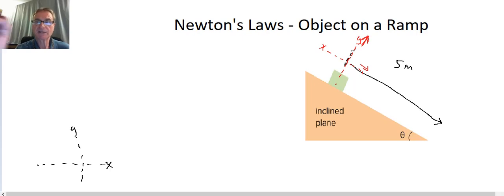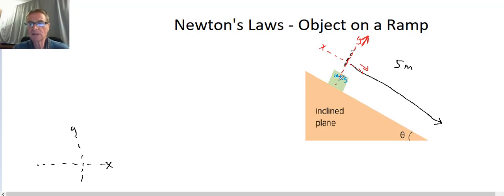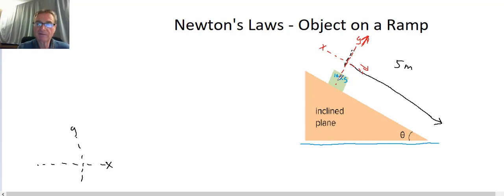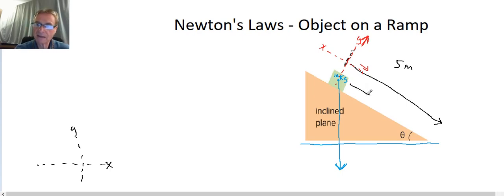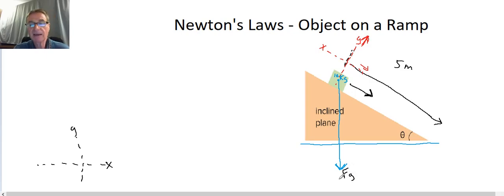So let's take a look at the forces on our block. We're going to assume our block has a mass of 10 kilograms. It's a frictionless surface, so we don't have friction, but we do have gravity. Gravity always pulls towards the center of the Earth — straight down. Since our block is going to be moving down the ramp, something is making it move in that direction. What I can do is break up my gravity vector — the force due to gravity — into its components: an x component and a y component.